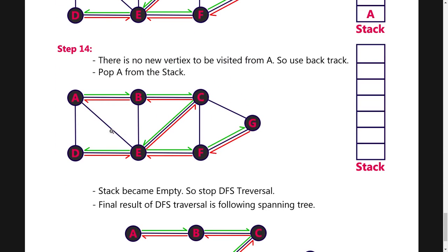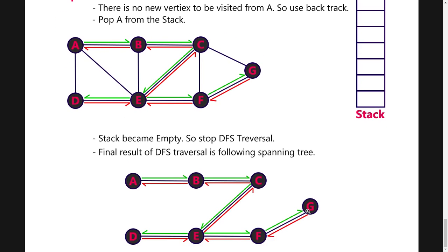Then we have to remove the unwanted edges which are not used in the DFS. This is the final step of the DFS algorithm. So here we are seeing the spanning tree.